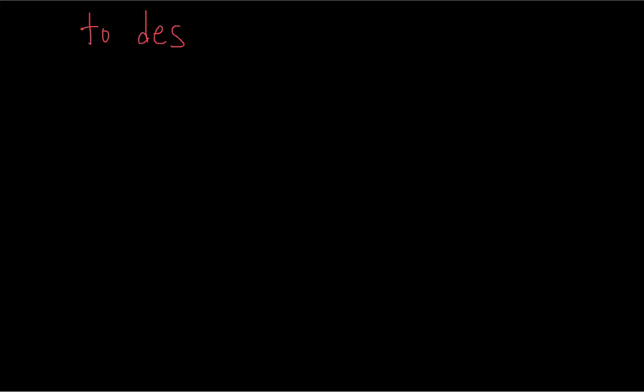To describe a line in three-dimensional space, all we needed was an initial point on the line and any vector which was parallel to the line. So what do we need to describe a plane, which you could say is basically the equivalent of a line in two-dimensional space?